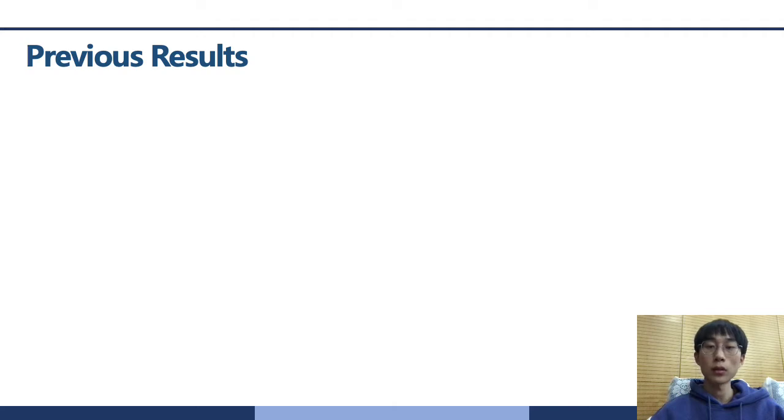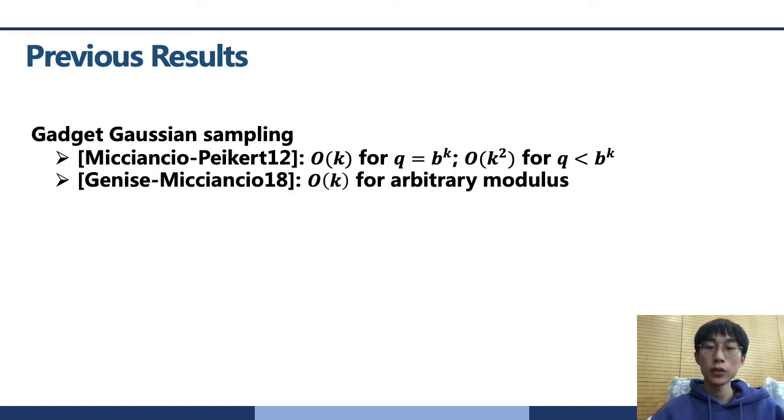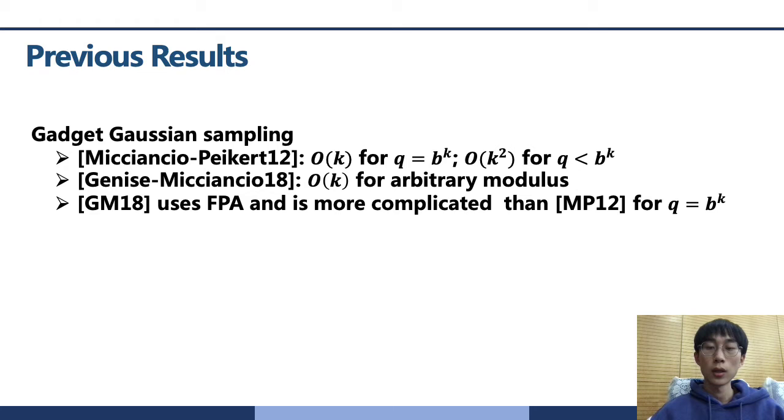Before I talk about our contribution, I'm going to go over the previous gadget algorithms. The first gadget lattice algorithm was given in MP12. And there, they give a discrete Gaussian sampler with linear time and space only for power B modulus. For arbitrary modulus, the algorithms need quadratic complexity. Then, Genise-Micciancio came up with a way to sample with linear time for arbitrary modulus, but need using floating-point arithmetic and is more complicated than the special algorithm for power B modulus in MP12.